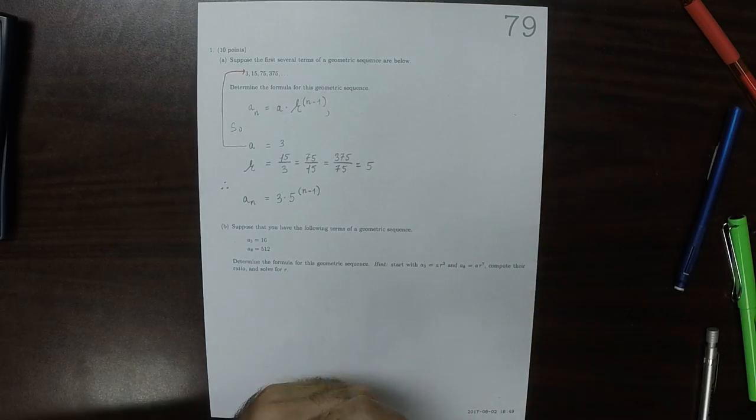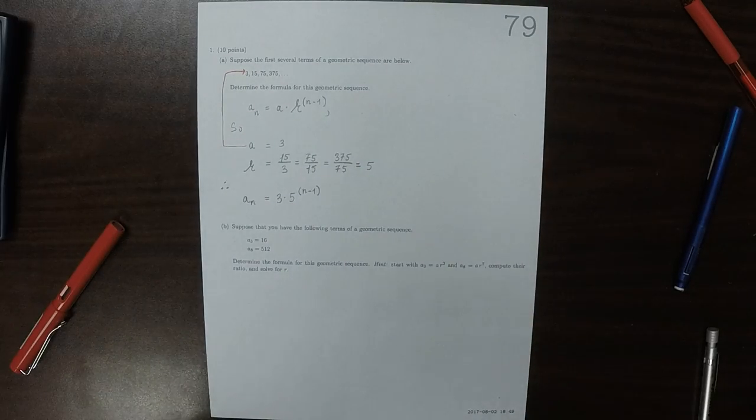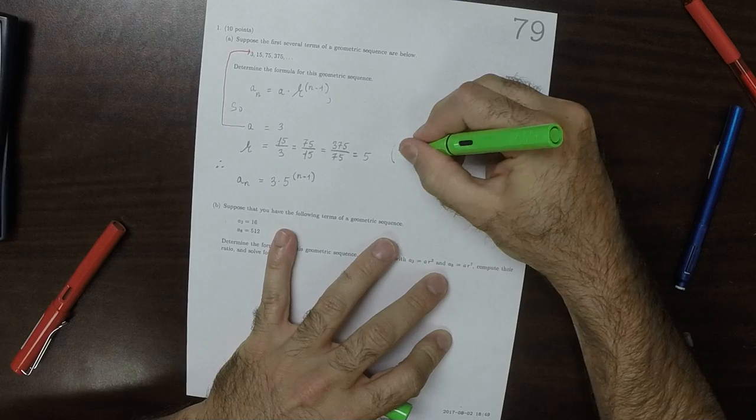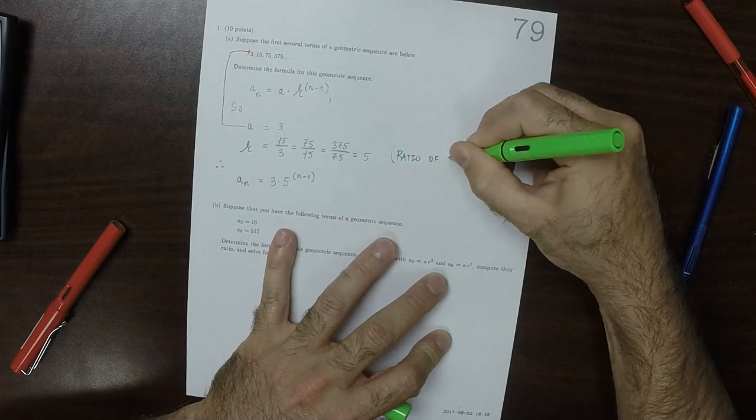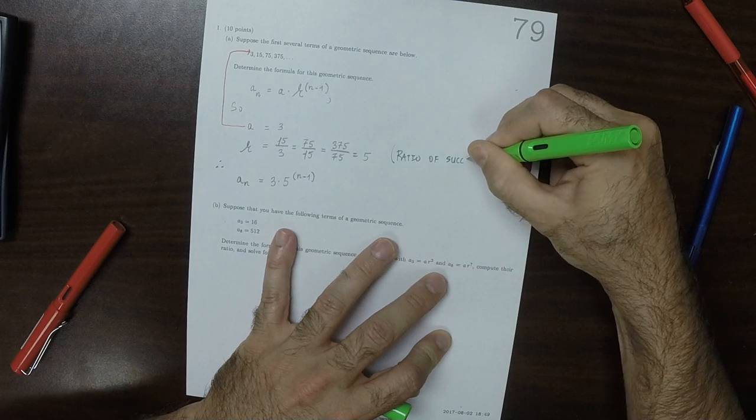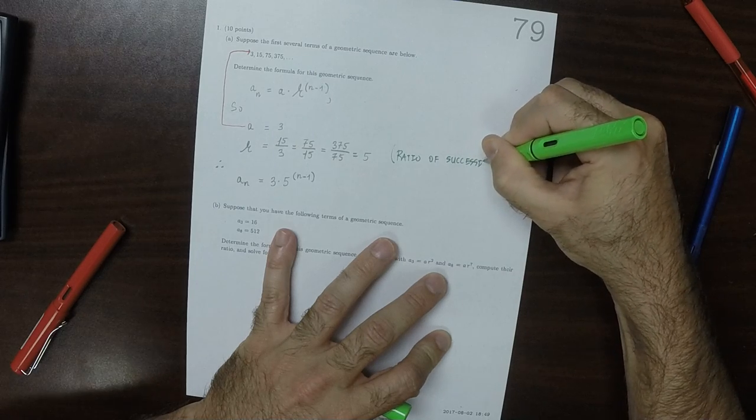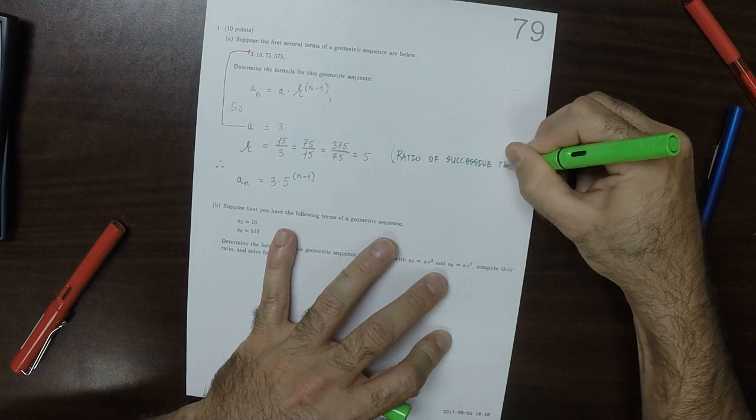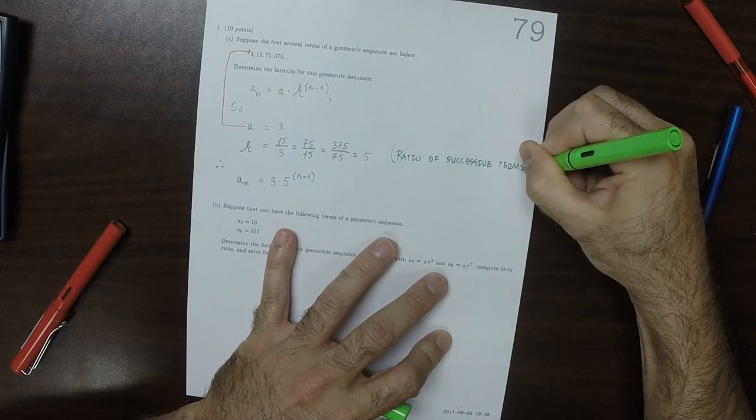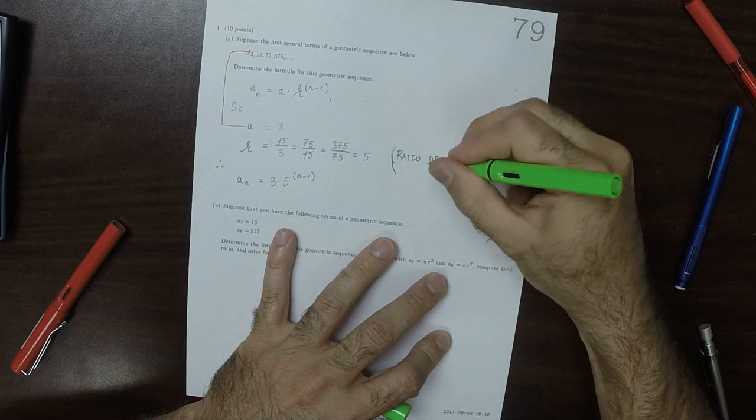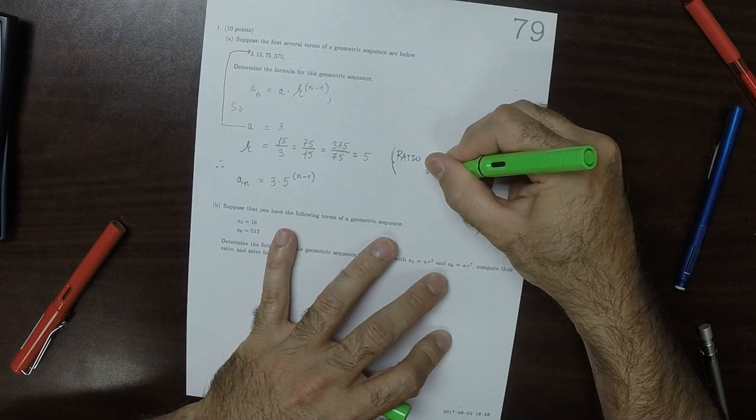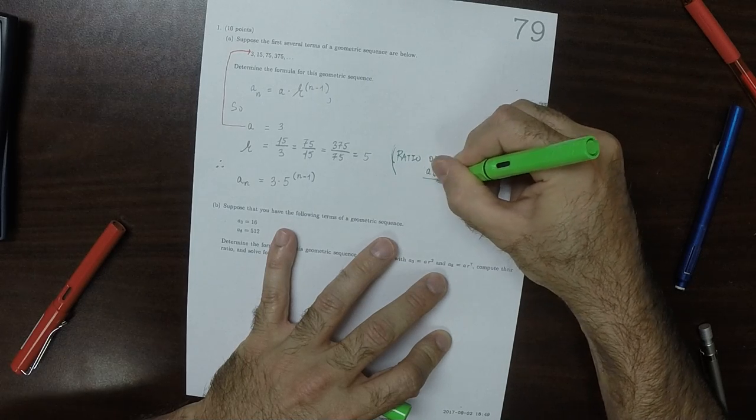This is the ratio of successive terms, like a_6 over a_5.